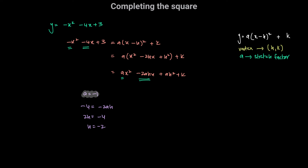To get the value of k, we compare the constant terms on both sides. The constant term on the left is 3, and on the right it is ah squared plus k. So ah squared plus k equals 3. With a equal to negative 1 and h equal to negative 2, we get negative 1 times 4 plus k equals 3, so negative 4 plus k equals 3, and adding 4 to both sides gives k equal to 7.